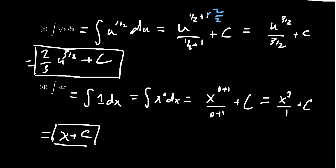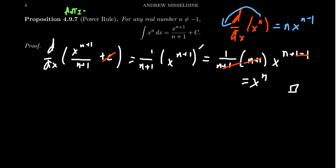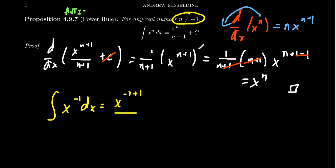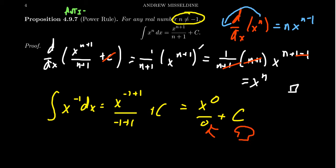You can double-check that the derivative of x plus c is just one, so this is the correct anti-derivative. Now, there's one important thing to mention: you can apply the anti-power rule for any power function except when n equals negative one. If you try to apply it to the integral of x to the negative one, the rule says take negative one plus one over negative one plus one — you get x to the zero over zero, and we've divided by zero. That of course is undefined and must be avoided.